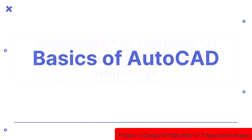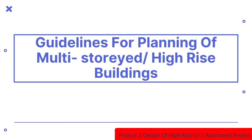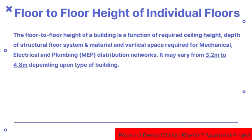Hello everyone. In this video we will discuss guidelines for planning of multi-storied or high-rise buildings. The first guideline is floor to floor height of individual floors. The floor to floor height of a building is a function of required ceiling height, depth of a structural floor system and material, and vertical space required for mechanical, electrical and plumbing distribution networks. It may vary from 3.2m to 4.8m depending upon the type of building.